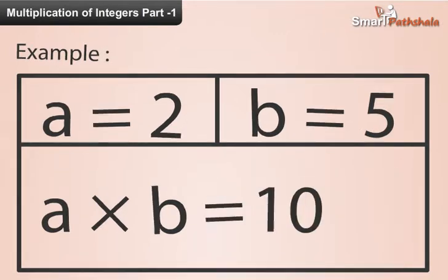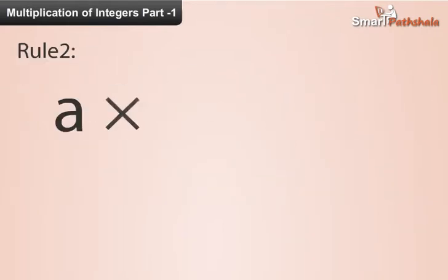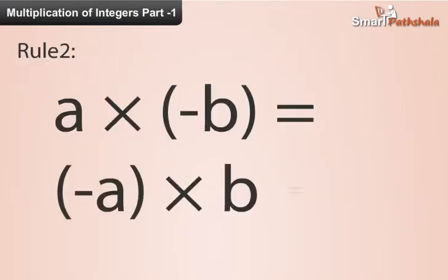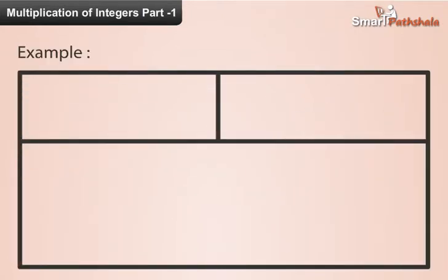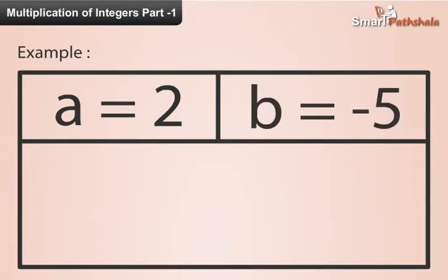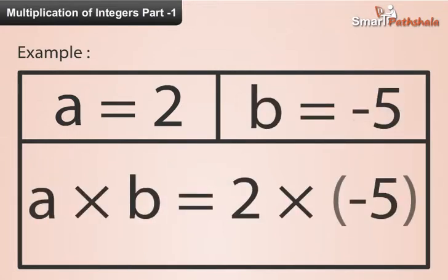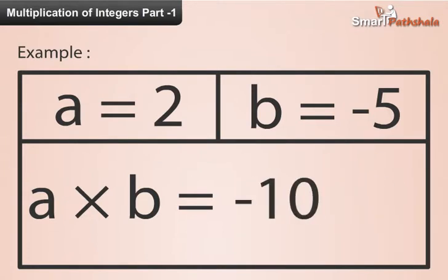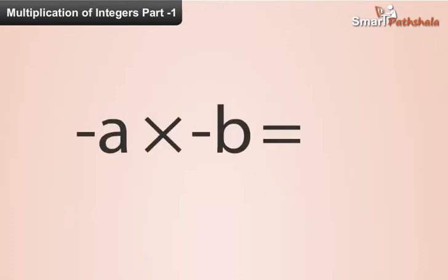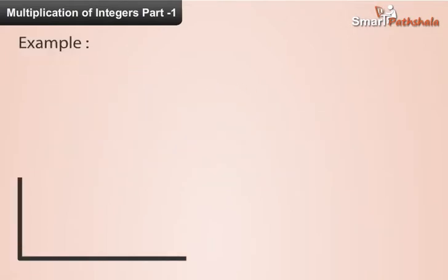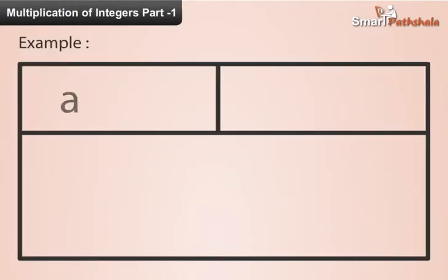Rule 2: the product of two different-sign integers is the product of their numbers with a negative sign. For example, the product of 2 and minus 5 is minus 10. Similarly, when we multiply two integers of negative signs, the product is an integer with a positive sign. For example, the product of minus 5 and minus 3 is 15.